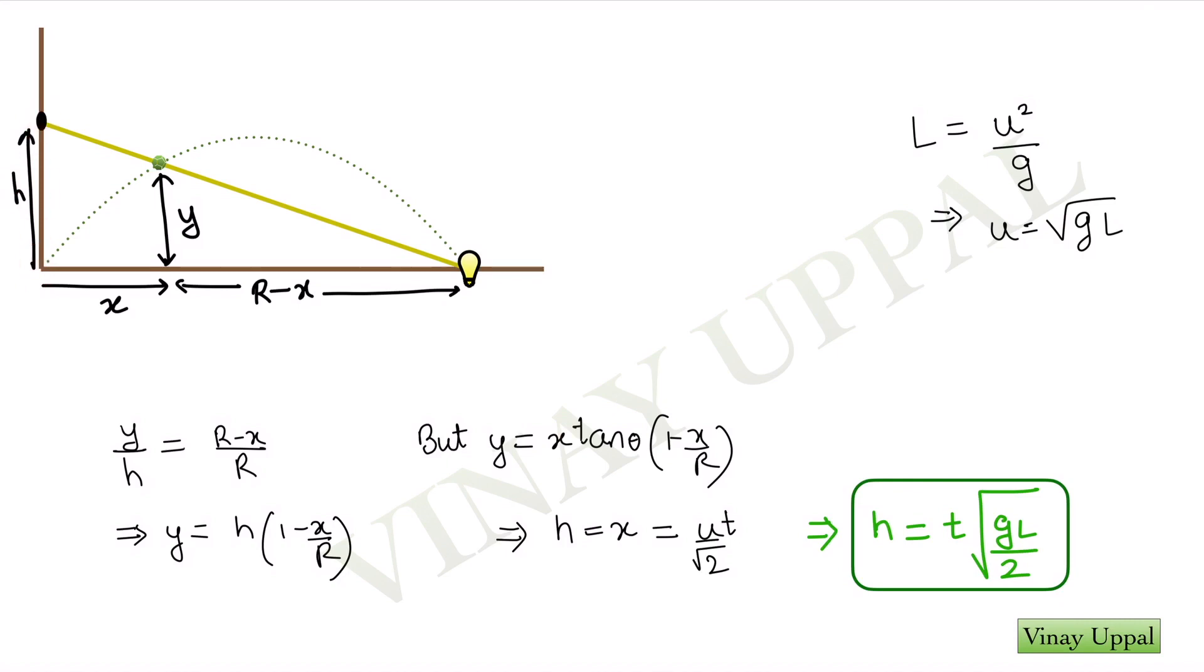And firstly, I can calculate the speed here, the initial speed knowing that it should be thrown at 45 degrees. And I know that the range formula is u square sine 2 theta by g. For 45 degrees sine 2 theta will become 1. And my range which is given as l in the question should be equal to u squared by g. And therefore, I get the initial speed.